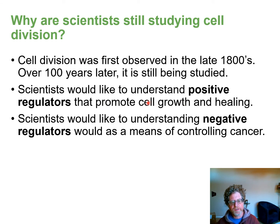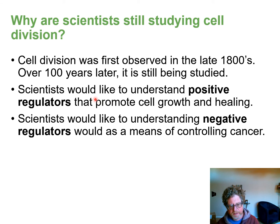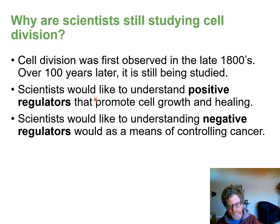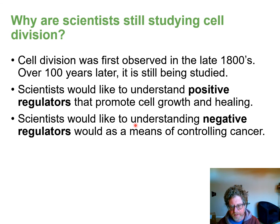Even though this process has been known for over 100 years, it's still a very active area of study. In terms of positive regulators, imagine if a doctor could inject embryonic stem cells with the right factors to grow new nerve cells and reconnect a damaged spinal cord. In terms of negative regulators, imagine if a doctor could inject factors to stop cancer cells from replicating.